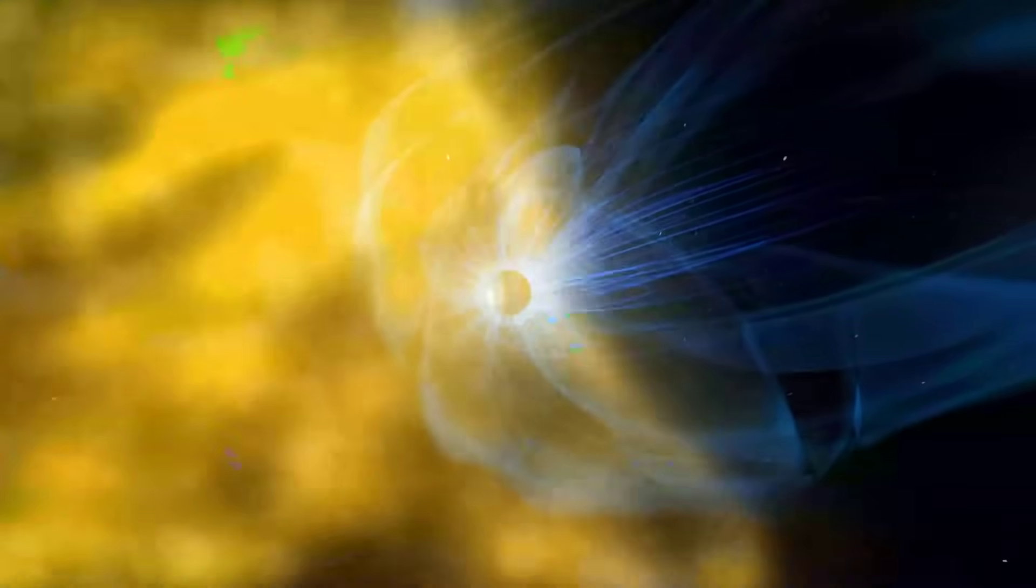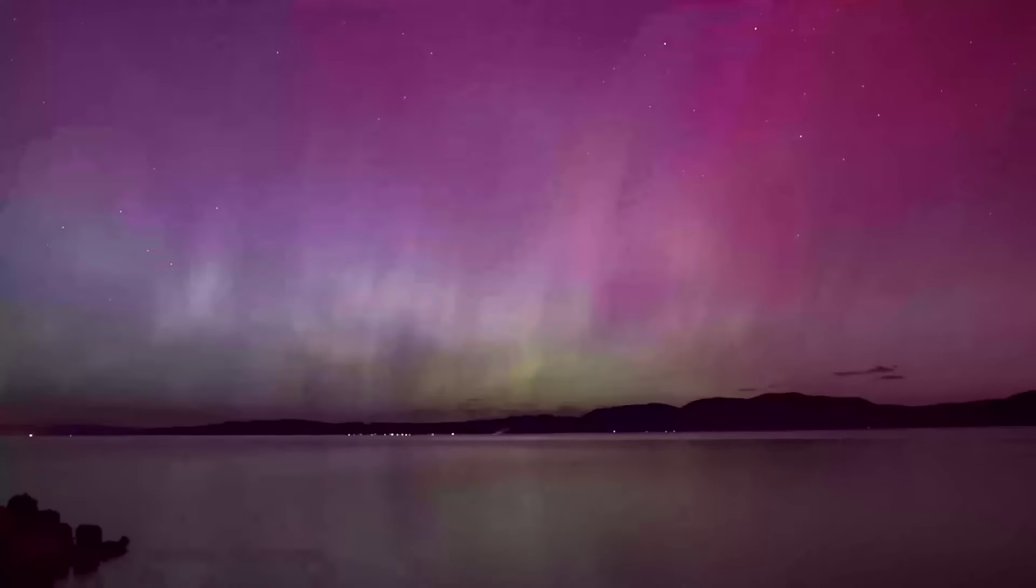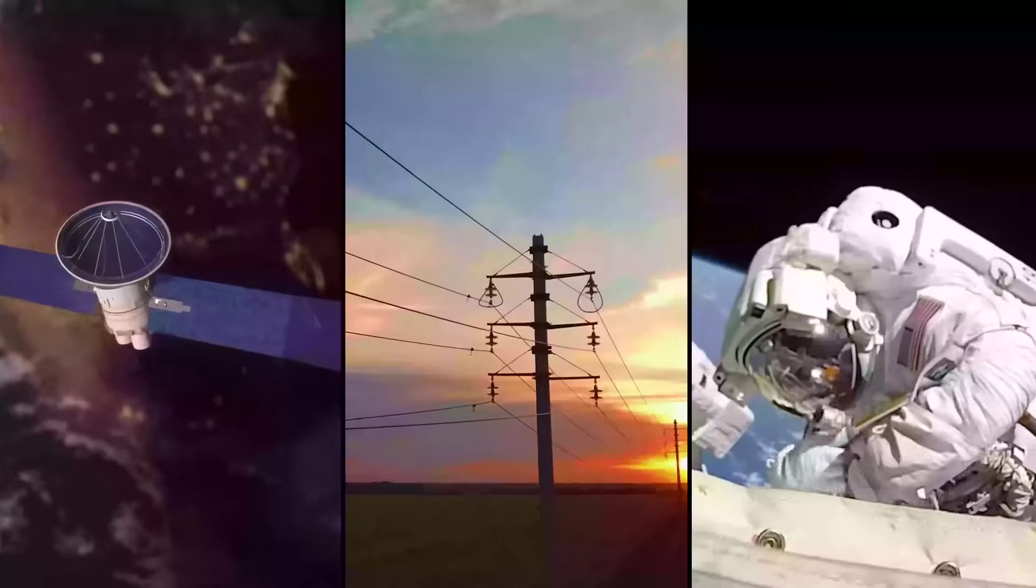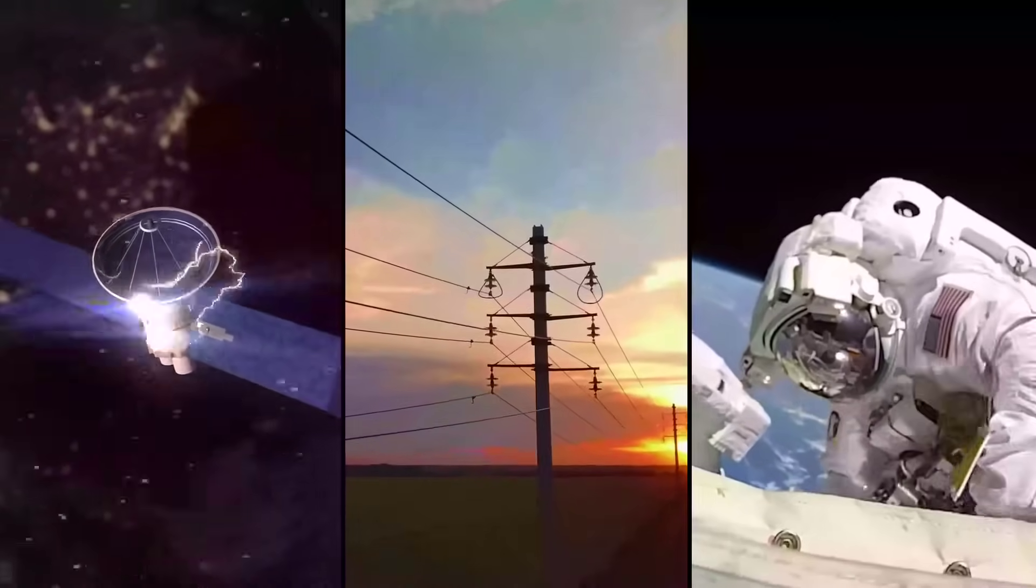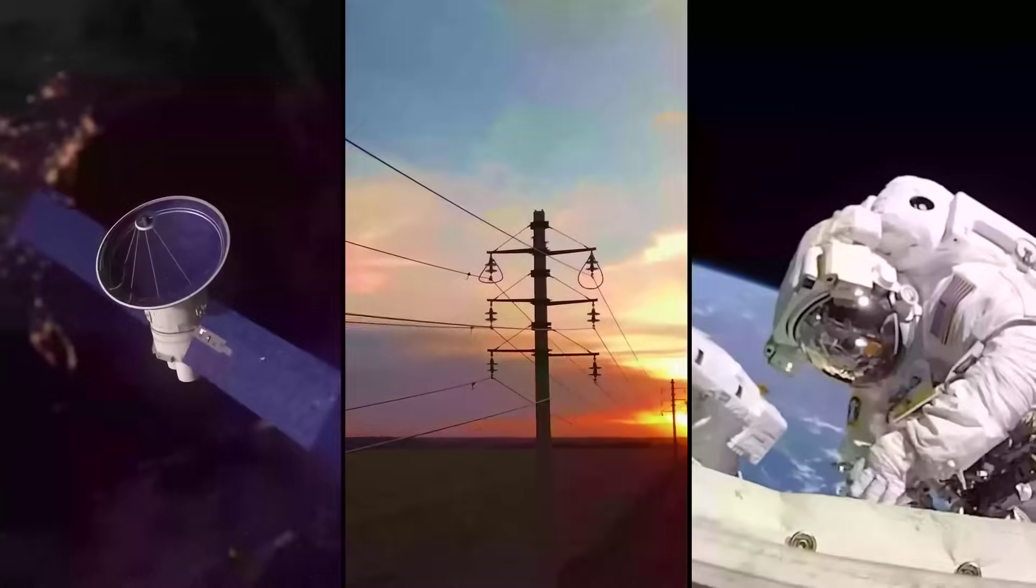When the most impactful eruptions reach Earth, they can trigger auroras. But they can also harm satellites, disrupt power grids, and expose astronauts to dangerous radiation.